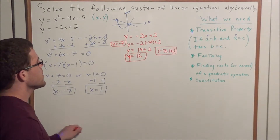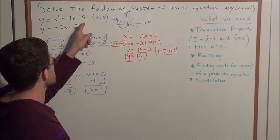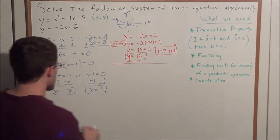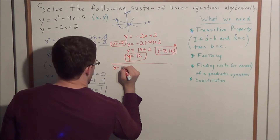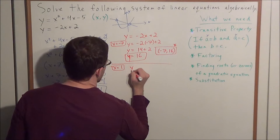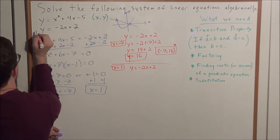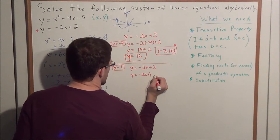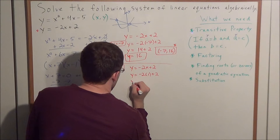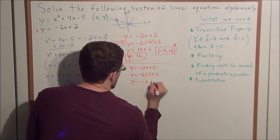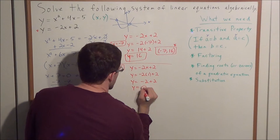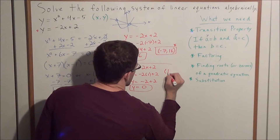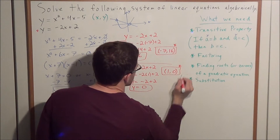It's a potential solution because we evaluated it for the linear equation — we still need to check the quadratic. But first, let's also evaluate x equals positive 1 in y equals negative 2x plus 2. We get y equals negative 2 times 1 plus 2, which is negative 2 plus 2, so y equals 0. This gives us the potential solution 1, 0.